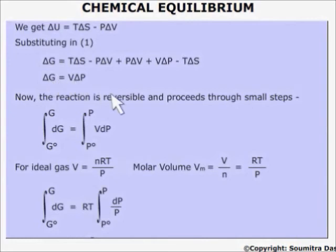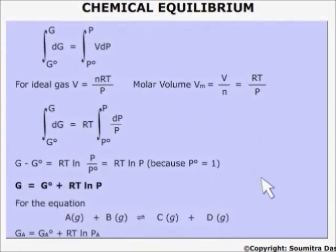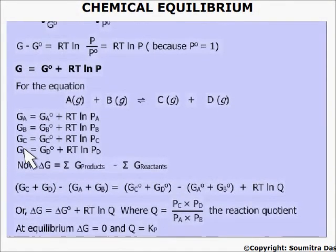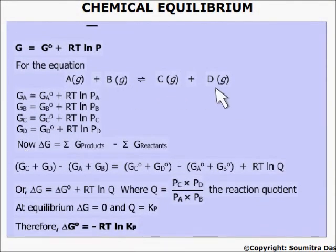Now since the reaction is reversible and proceeds through small steps, we can integrate this equation like this. This superscript means standard state. Now for an ideal gas, V equals nRT by P, or if we talk about molar volume, then V equals RT by P.